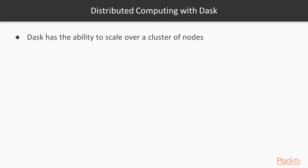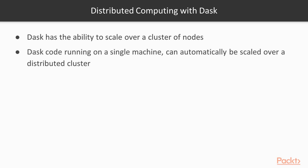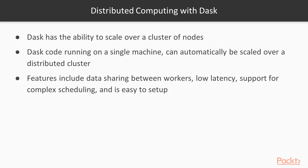As we have discussed previously, Dask has the ability to scale over a cluster of nodes. The best part about Dask is that code written to run in parallel using multiple cores on your single system can be automatically scaled over a distributed cluster of Dask nodes. It is very easy to set up a Dask cluster, which we'll see in subsequent videos, and it also has features like data sharing between workers. This ensures there is no network bottleneck because data does not go through the master node.